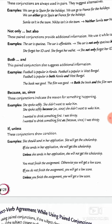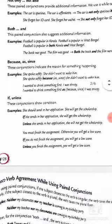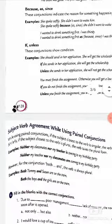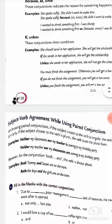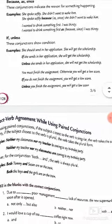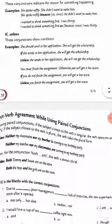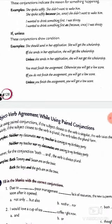Subject-verb agreement while using paired conjunctions. If the subject closest to the verb is singular, the verb takes the singular form. Neither my classmates nor my teacher is coming. The verb is 'is' because teacher is singular.